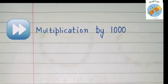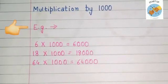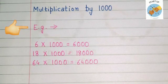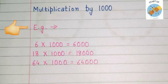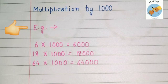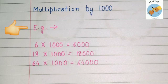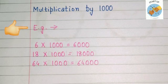Let's see some examples. Six multiplied by one thousand: first we will put three zeros at the end — zero, zero, zero — that is in the ones place, tens place and hundreds place. Then we will multiply six by one. So the answer will be six thousand.